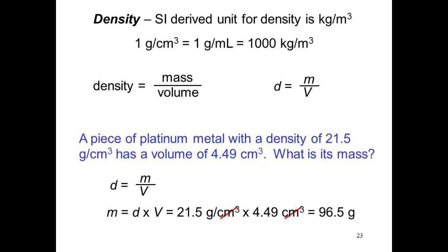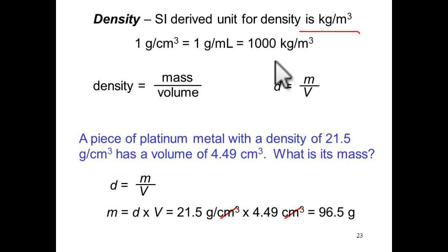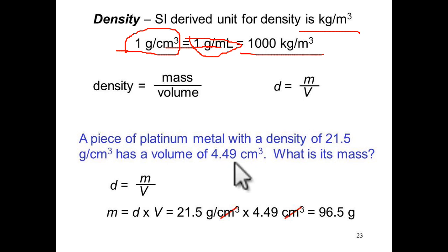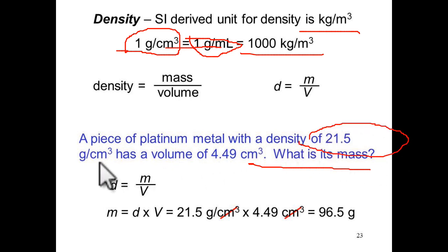Density is commonly used in chemistry. The simple formula for density is mass over volume: d = m/v. The SI unit for density is kg/m³, but questions may give it in g/cm³. A worked example: given a piece of platinum metal with a known density and volume, you substitute into the formula and calculate the mass — the answer is 96 grams.